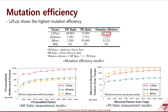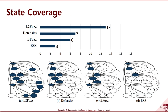Therefore, L2Fuzz shows the highest performance in mutation efficiency. For state coverage, L2Fuzz can cover almost twice as many L2CAP states as existing fuzzers, covering 13 states. L2Fuzz improved the accuracy of state transition by mapping only valid commands to each state. Conversely, the state coverage values of other fuzzers were lower than L2Fuzz's because they did not leverage valid commands for each state and were less effective at checking target responses.